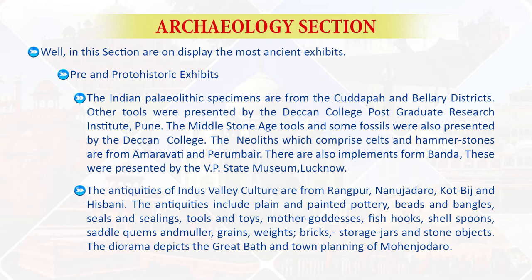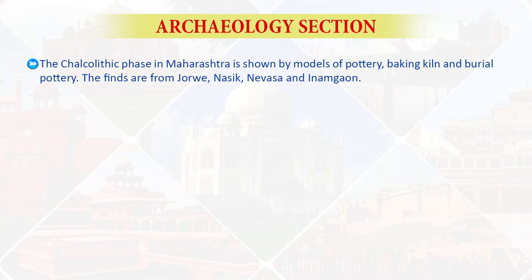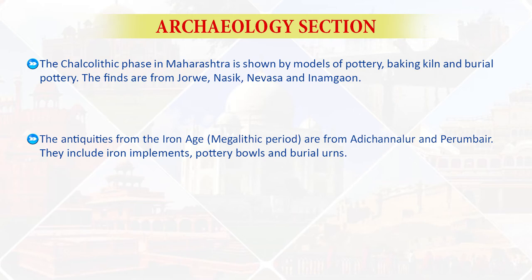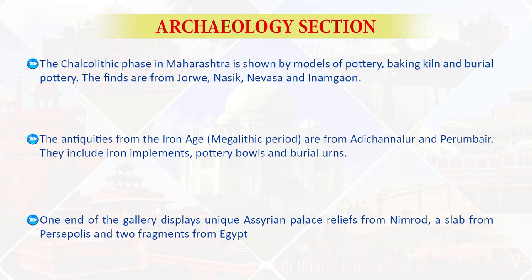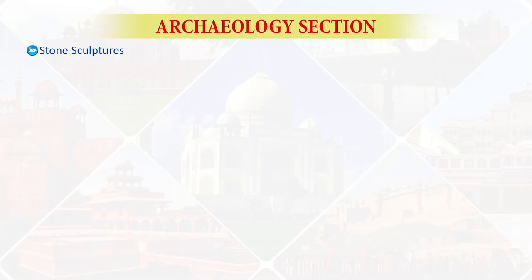Also displayed are mother goddesses, fish hooks, shell spoons, saddle querns, muller grains, weights, bricks, storage jars, and stone objects. The diorama depicts the great bath and town planning of Mohenjo-daro. The Chalcolithic phase in Maharashtra is shown by models of pottery baking and burial pottery. The finds are from Jorwe, Nasik, Nevasa, and Inamgaon. The antiquities from the Iron Age are from Adichanallur and Perambur, including iron implements, pottery bowls, and burial urns. One end of the gallery displays Airan Palace reliefs from Nimrud, a slab from Persepolis, and two fragments from Egypt.